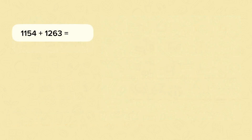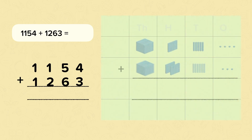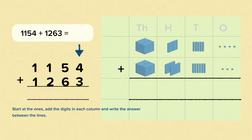Now let's look at this calculation: 1,154 add 1,263. We'll set it out with each digit in the correct column and use some pictures to help us. We know we're going to have to use exchanging because if we look at the tens column, the total of the numbers in that column is more than 9. We start at the ones as before, adding digits and writing the answer between the lines. So 4 add 3 is 7.